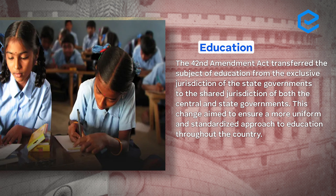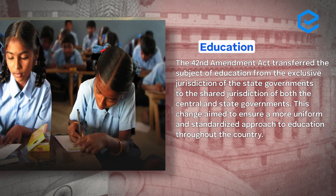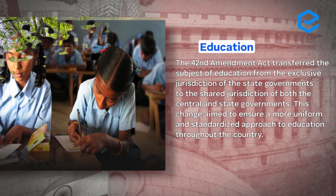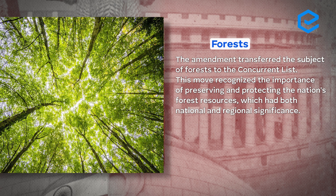Education: the 42nd Amendment Act transferred the subject of education from the exclusive jurisdiction of state governments to the shared jurisdiction of both central and state governments. Education is obviously a regional thing — what is taught and in which language is decided by the state — but there should also be a country-wide uniformity. Subjects needing uniformity go to the central list, but education was moved to the concurrent list to set a uniform standard all over India while allowing center involvement. Similarly, forest was also transferred to the concurrent list.